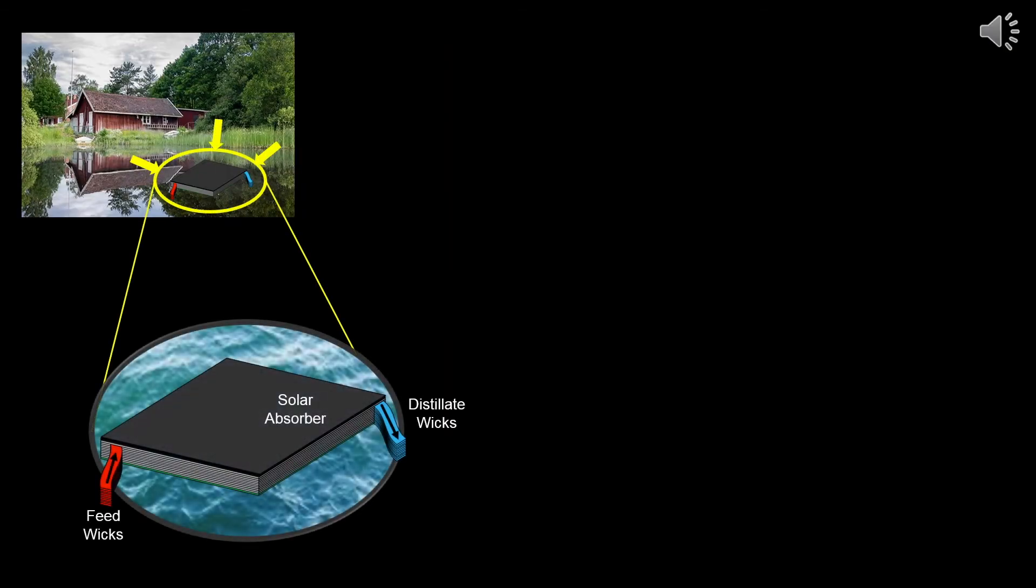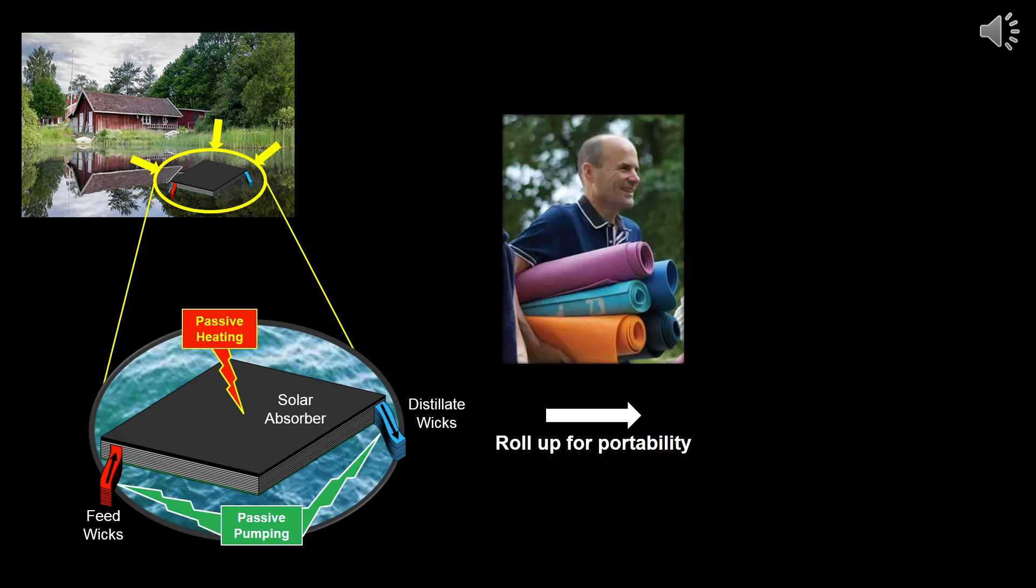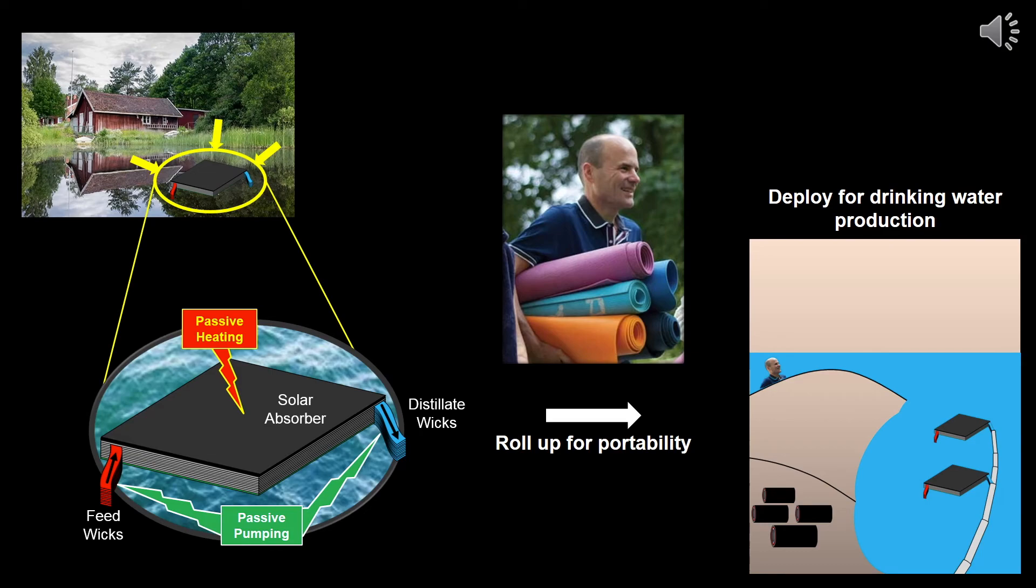Solar Aquaflex is not only completely integrated for passive pumping and heating, but its flexible mat-like structure makes it the first highly portable solar thermal desalination device of its kind.